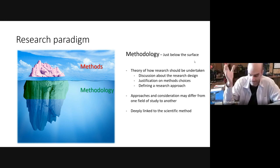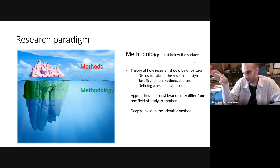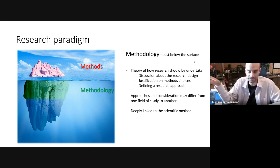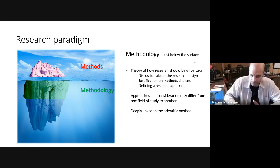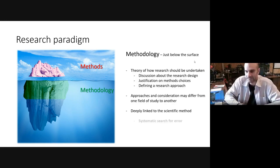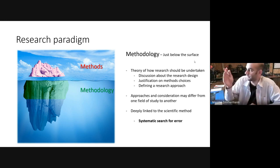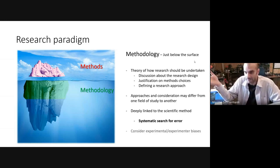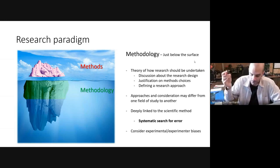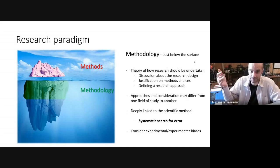Methodology is deeply linked to the scientific method. It is expected through your methodology that you understand the state of the art of your research field and therefore decide to build on it. If you were to summarize what methodology is about: it's the systematic search for error. Through methodology you describe that you chose this set of actions to avoid this error from arising, to avoid any confounding variable. You want to consider experimental biases — at least be aware that they exist and take action to control them.